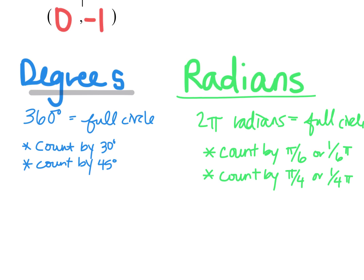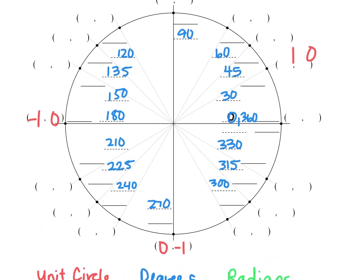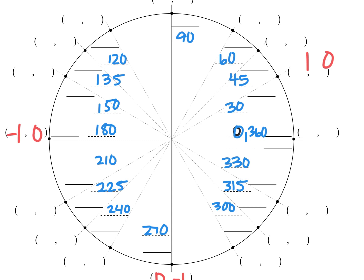All right so just like with degrees make sure you have those little cheats down of what you're going to count by and let's go back up here and fill in our circle. Okay so same idea we're going to start in the same place and we're going to do the same kind of skip counting where we skip over those middle sections every time.